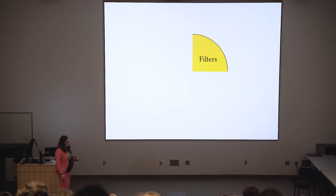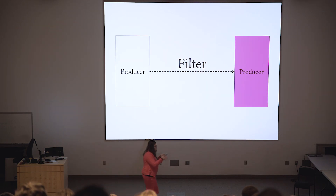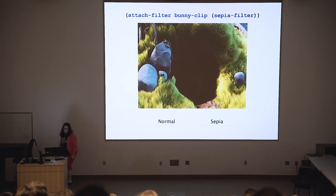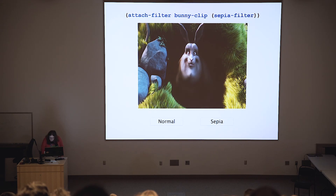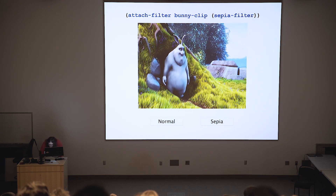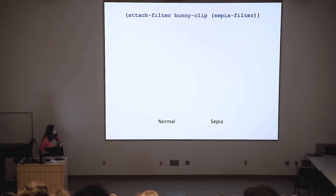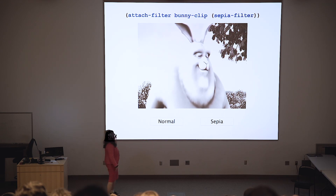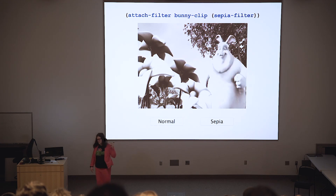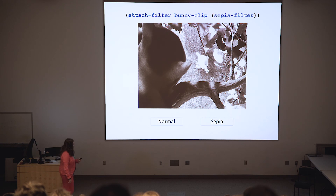Filters allow you to take a producer and munch some data with it and get a different producer. We can take this scene of a bunny waking up — from the Blender Foundation's open movie projects — and what we can do is apply this sort of sepia filter here. And we get the exact same film now, but if you were to look at it on my screen it looks as if it was made 70 or 80 years ago.